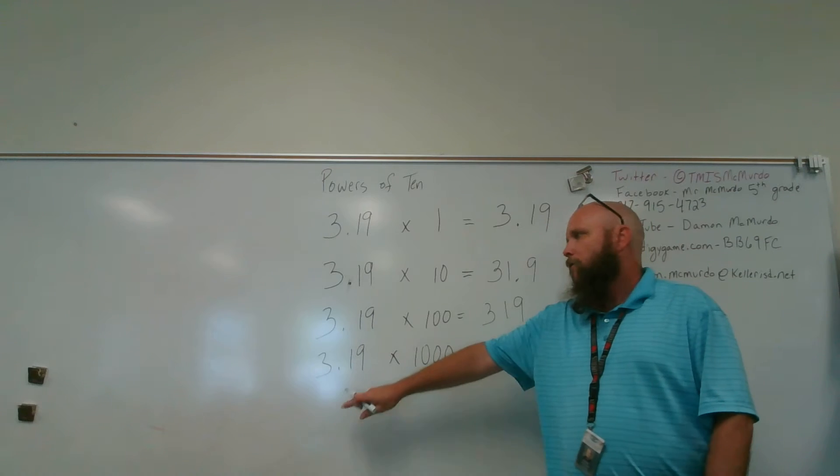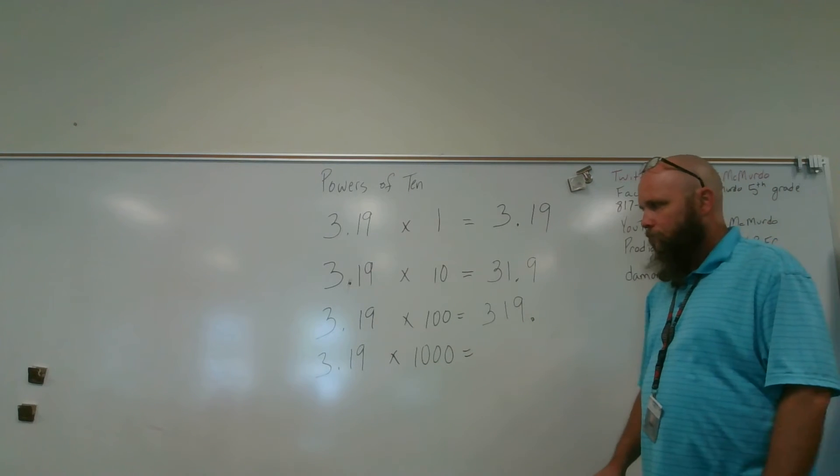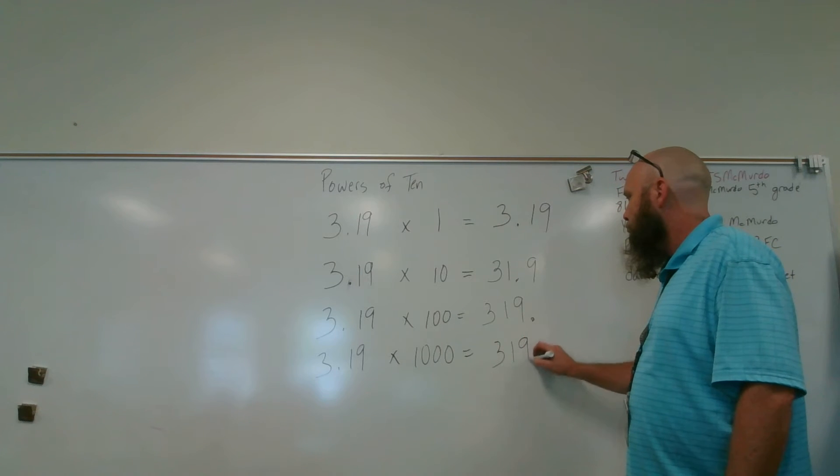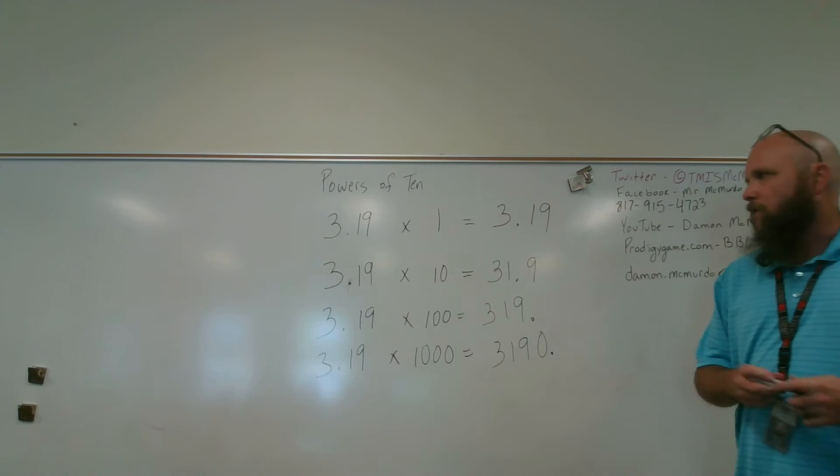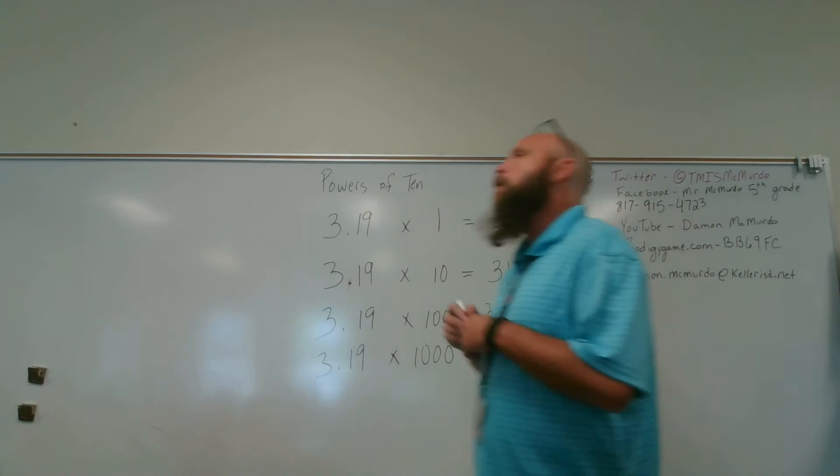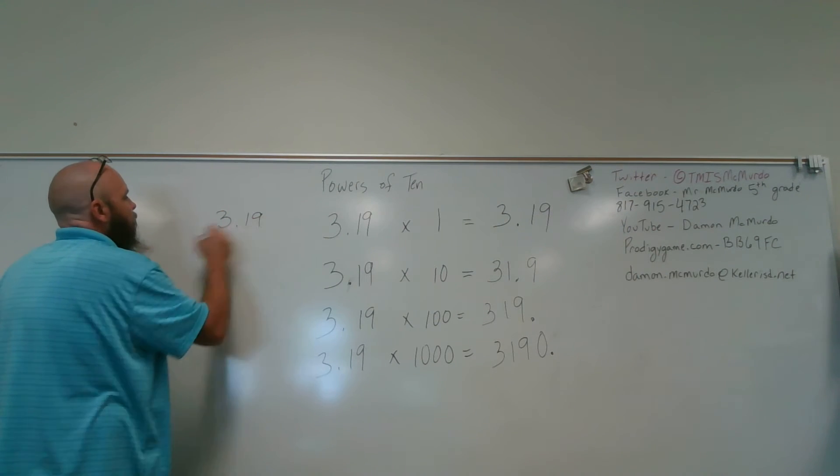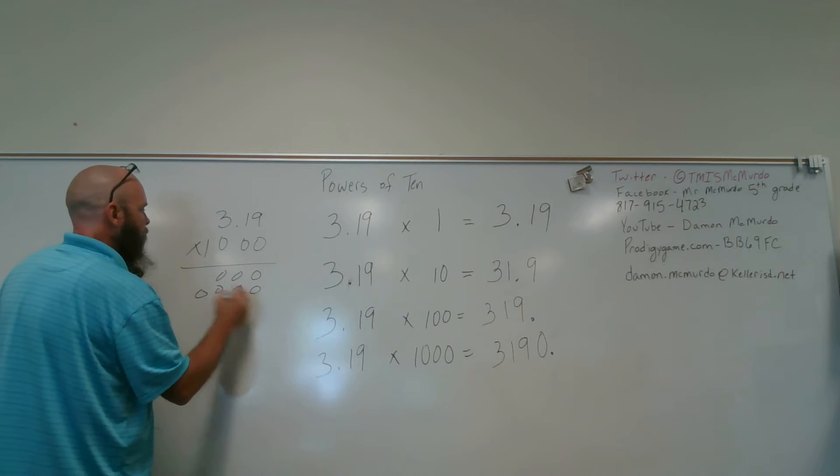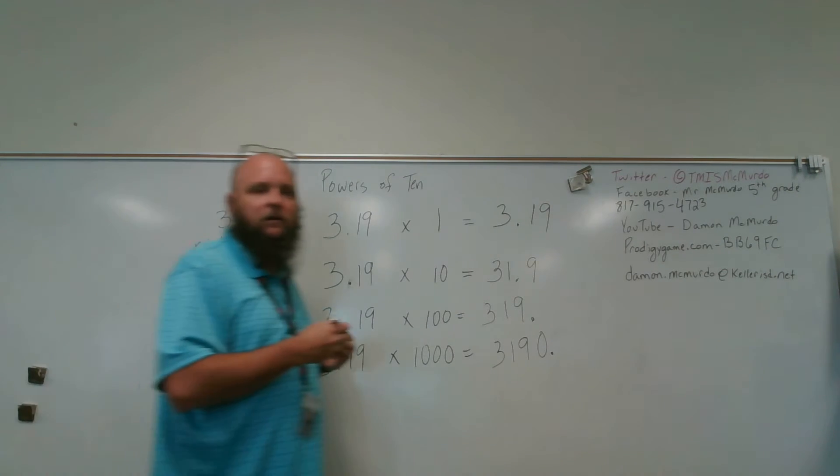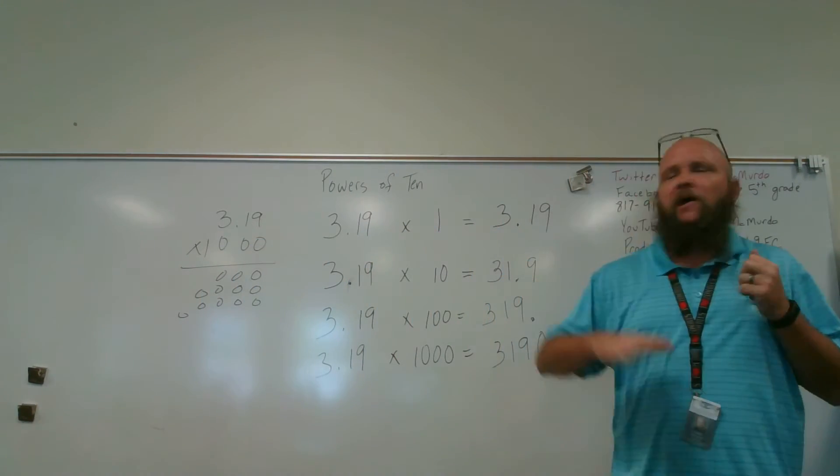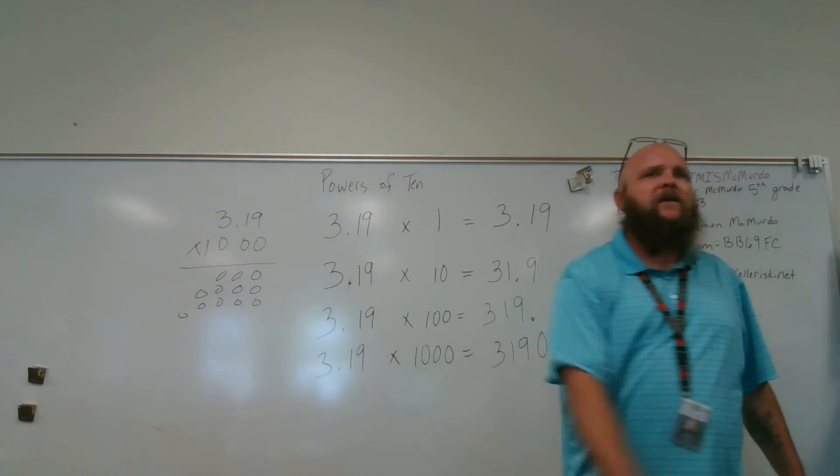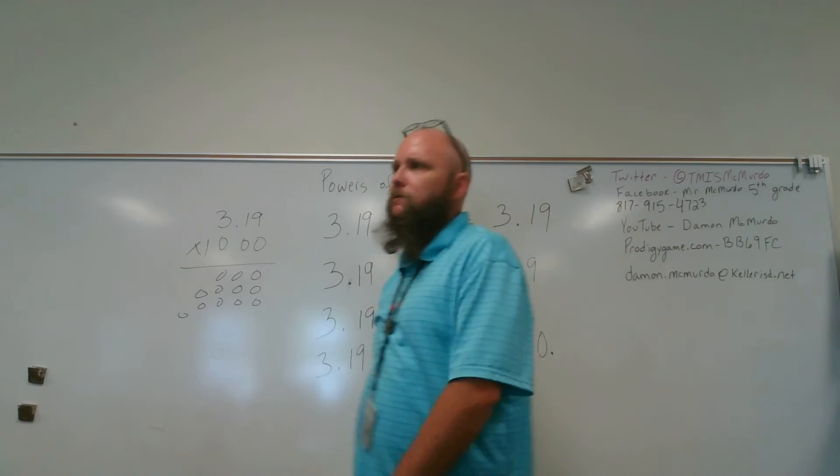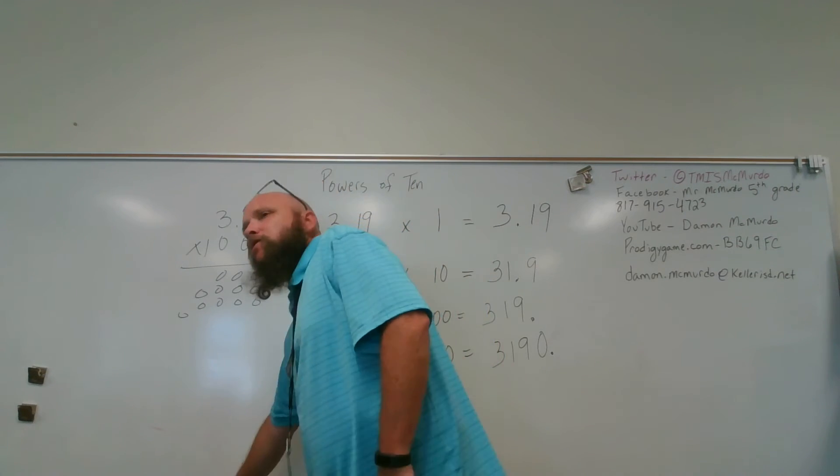Matthew, 3.19 times 1,000. I moved it over three times. In order to move it over three times, I have to add a zero at the end. So, this will save you a lot of time because nobody wants to go through 319 times 1,000. Nobody wants to do all that. When you can just move a decimal point. By powers of 10. 10. 100. 1,000. 10,000. 100,000. A million. As long as it's a 1 as the first number and 0 is all the way behind it, you're golden.